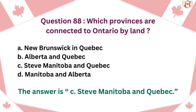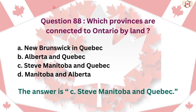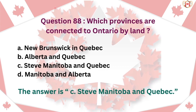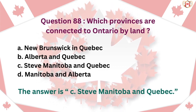Question 88: Which provinces are connected to Ontario by land? A. New Brunswick and Quebec, B. Alberta and Quebec, C. Manitoba and Quebec, D. Manitoba and Alberta. The answer is C. Manitoba and Quebec.